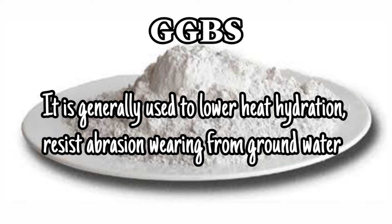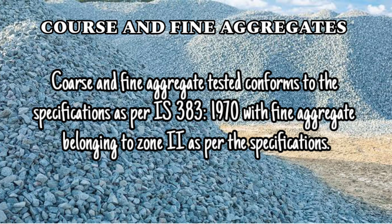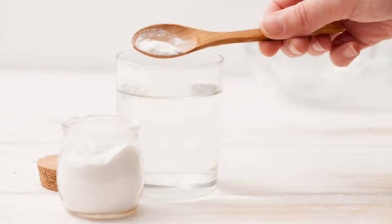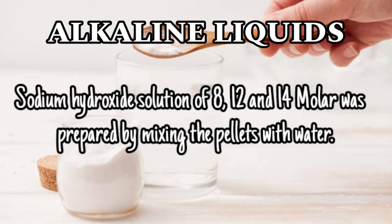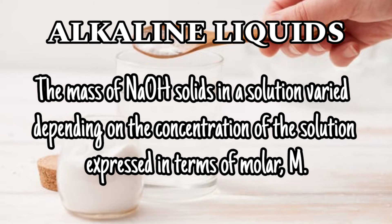GGBS is generally used to lower the heat of hydration and resist abrasion and wearing from groundwater. Coarse and fine aggregates tested conform to IS 383-1970 specifications, with fine aggregate belonging to Zone 2. The alkaline solution uses sodium silicate (Na2SiO3) and sodium hydroxide (NaOH); sodium hydroxide solutions of 8, 12, and 14 molar were prepared by mixing pellets with water, with mass varying depending on the molar concentration.